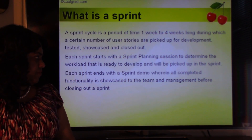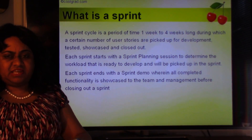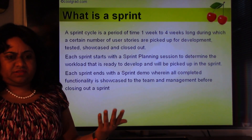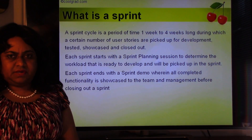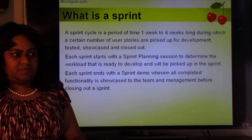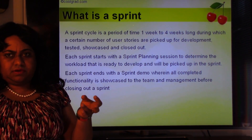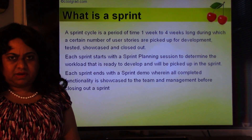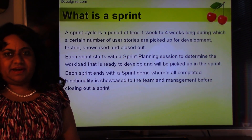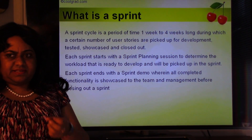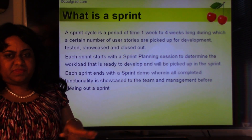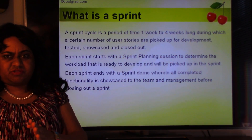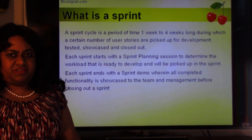Each sprint ends with a sprint demo where all the completed functionality is showcased to the entire team — product owners, business analysts, QA, dev leads, technical architects, and the scrum master. Business analysts or QA leads usually showcase the completed functionality. If there are P1 or P2 defects open, we probably can't close out the story, but minor defects are okay. If they're happy with the functionality, the stories are closed out at the end of the sprint.